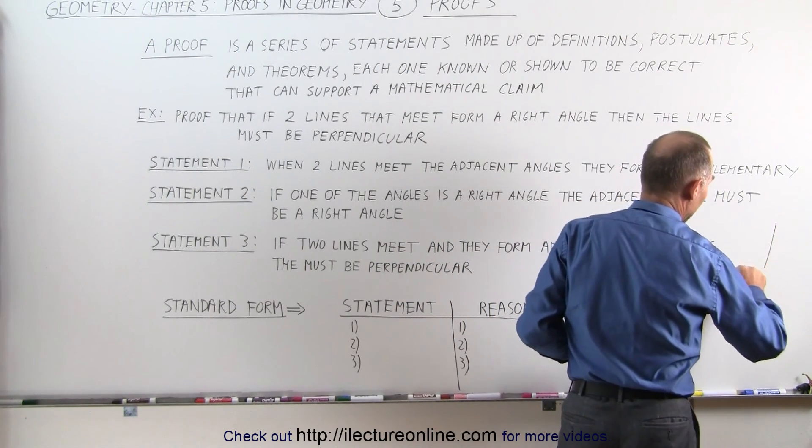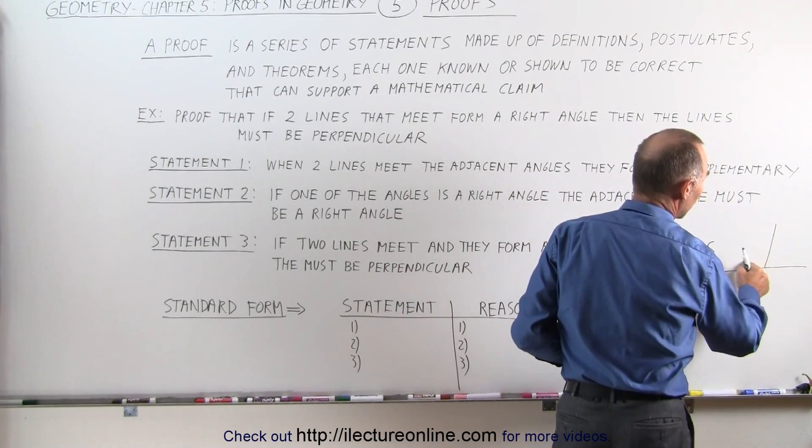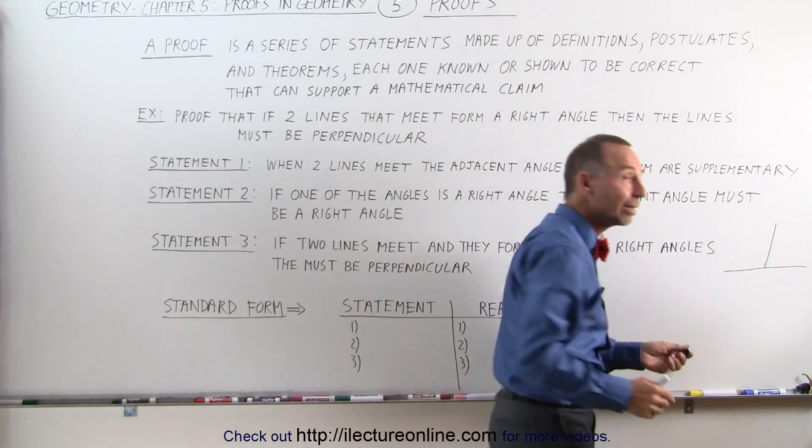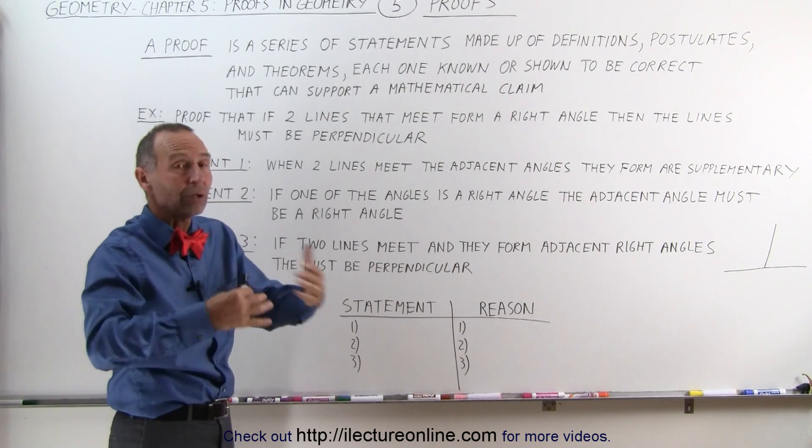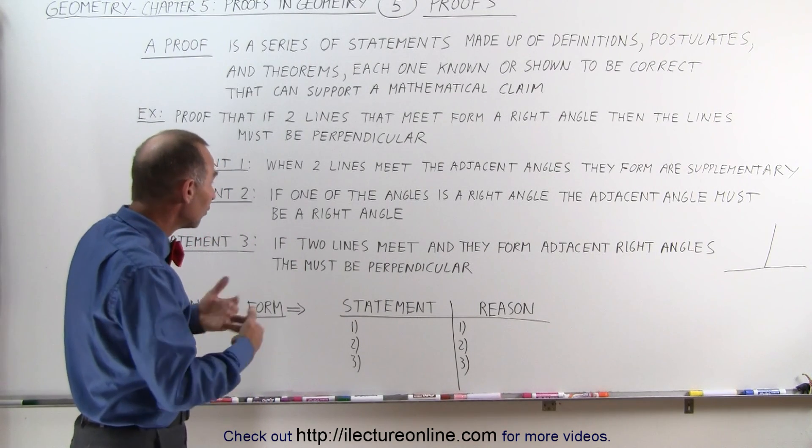Here's one line. There's another line. They meet. The two adjacent angles add up to 180 degrees. Therefore, we know they're supplementary. We don't need to prove that. We know that to be true. That's a postulate.